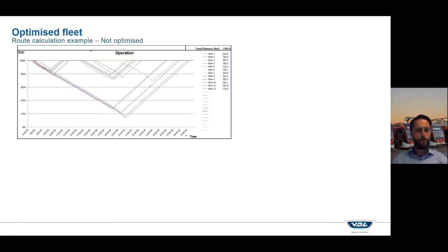To show you an example of what we do within VDL is this example of the route calculation that I do for my customers. In this case, you see this kind of graph of the operation. Every line represents a bus. And in this calculation, there are 12 different buses driving a total of 3,141 kilometers. You notice that there are quite some buses driving the whole day, and then at the end of the day, we return to the depot to have an overnight charging session.